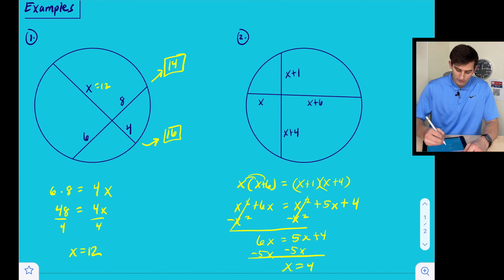So now if X is equal to four, then we know this would be four plus one, so this would be a measurement of five, this would be 10, this would be eight, and this would be four. So now we know that this chord is four plus 10, so 14, and this chord here is 13.